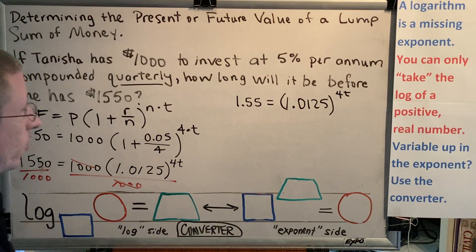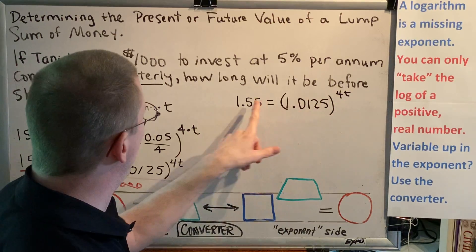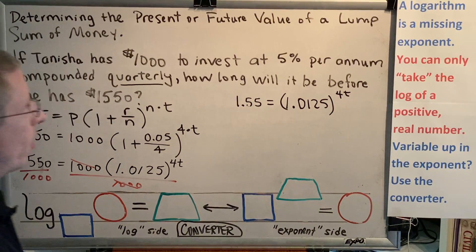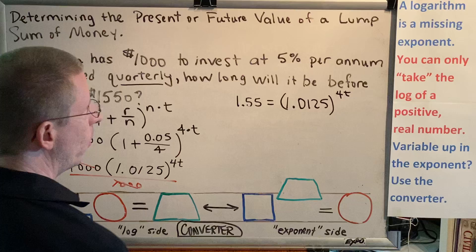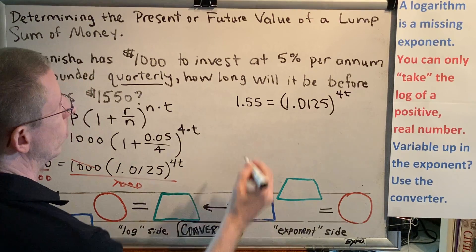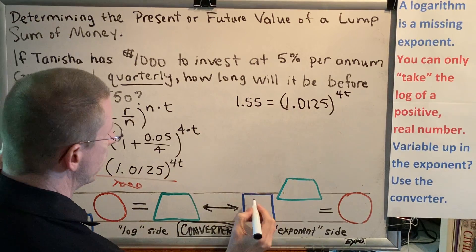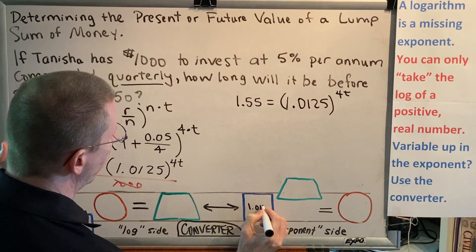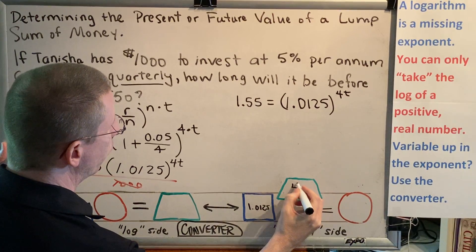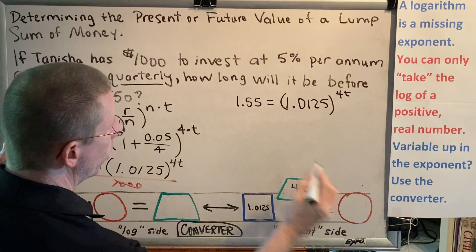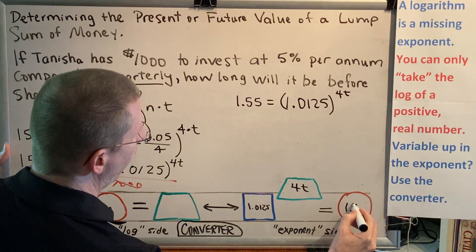Now we have the three objects we were hoping for, a base, an exponent, and an argument. And by putting them in our converter, we're able to find what 4t is equal to. Observe, base is 1.0125, exponent is 4t, argument is 1.55.